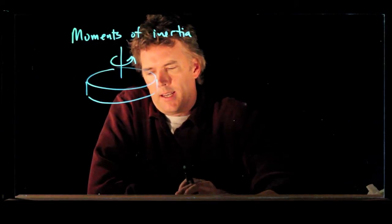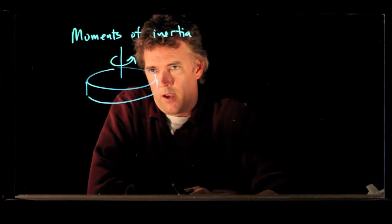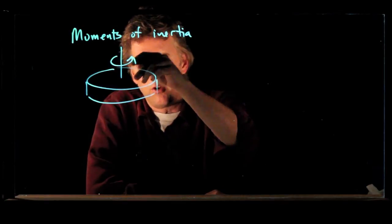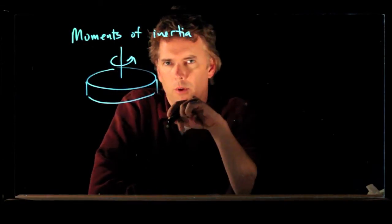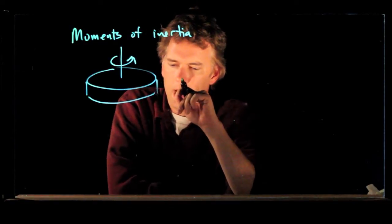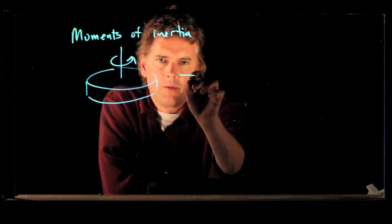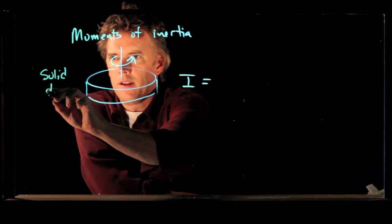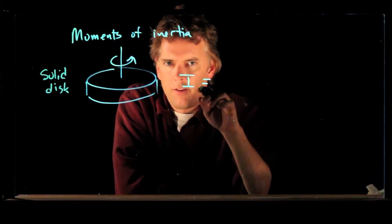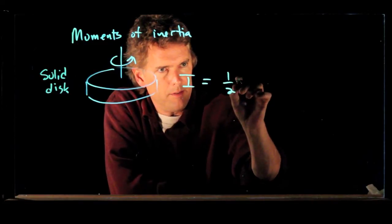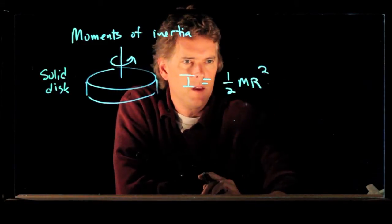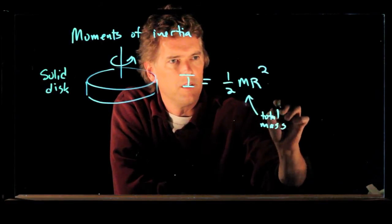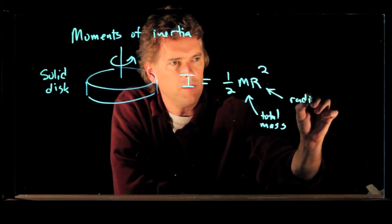Well, the way you calculate it is you do an integral. Okay, and you can do an integral by adding up every little mass in there times those positions squared. And you just do that throughout the whole disk. And it's actually not such a bad integral to do. But let's just write down what the answer is for a solid disk. I for a solid disk is equal to one half m r squared. Okay, m is the total mass of the disk. R is the radius of the disk.